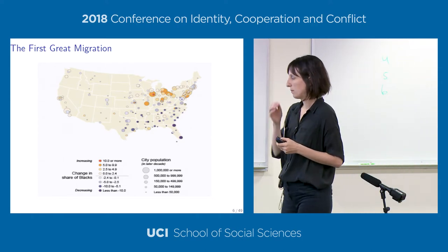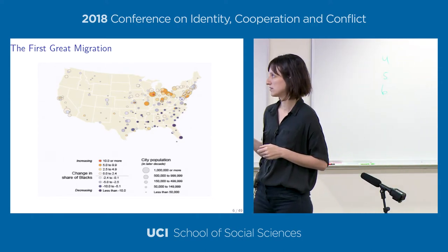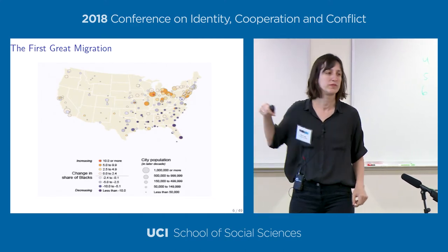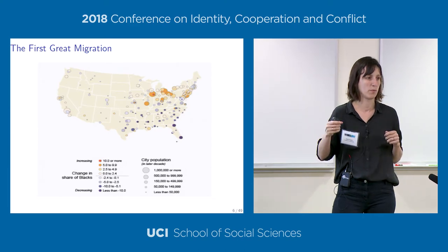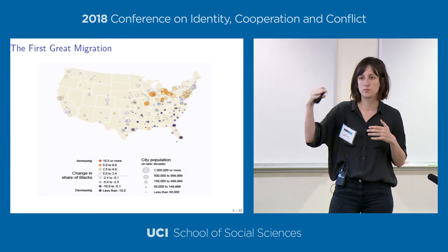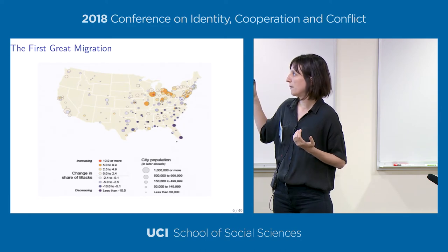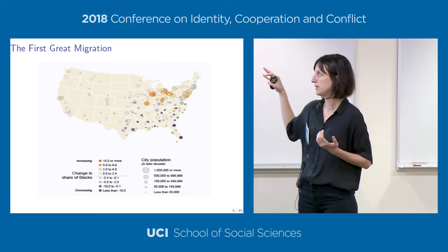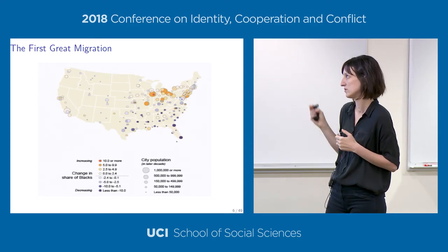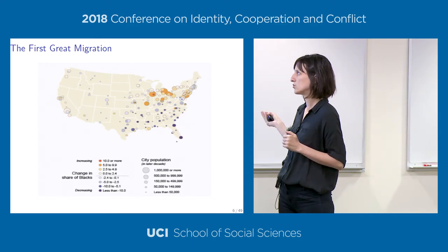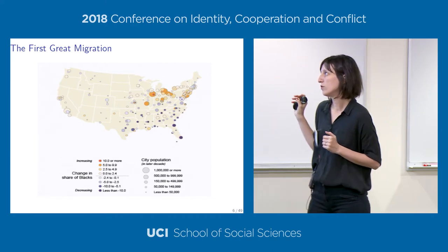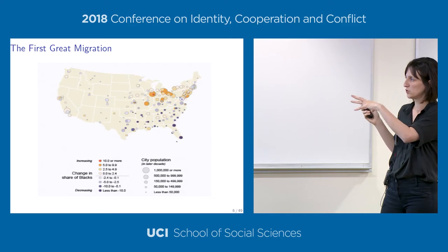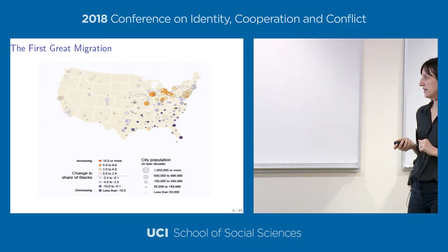A census figure shows changes in the share of blacks—a lot still moved within the South, from the Deep South to the border South. But many also moved to the urban Northeast and Midwest: the big cities like New York, Chicago, Detroit, and Philadelphia are basically where blacks moved to, and those are the places we use in our empirical analysis.